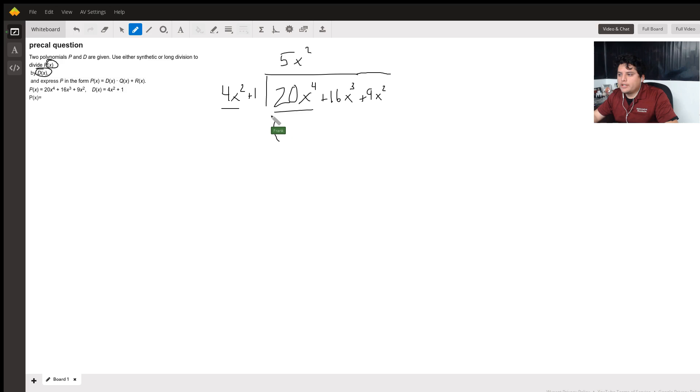What is 5x squared times 4x squared? We already said that's 20x to the fourth. And what is 5x squared times 1? That's going to be plus 5x squared. Now I put it all the way over here because we're going to be subtracting them from the original polynomial.